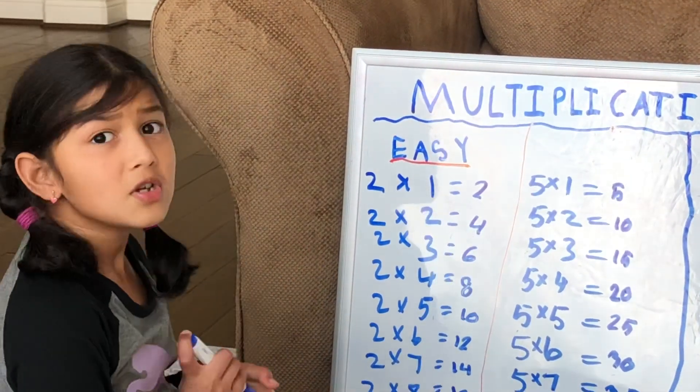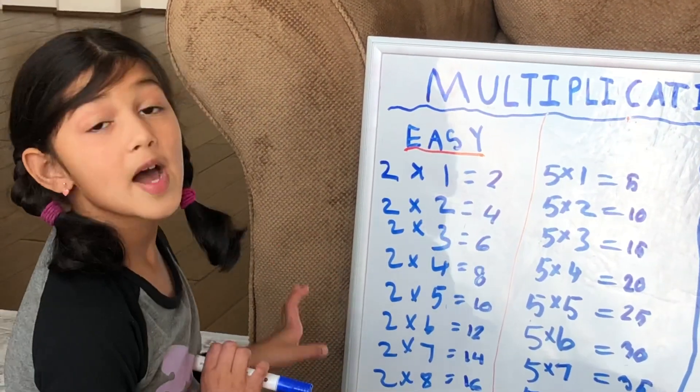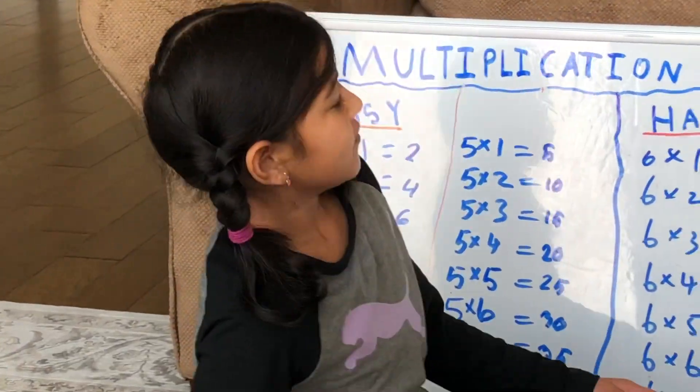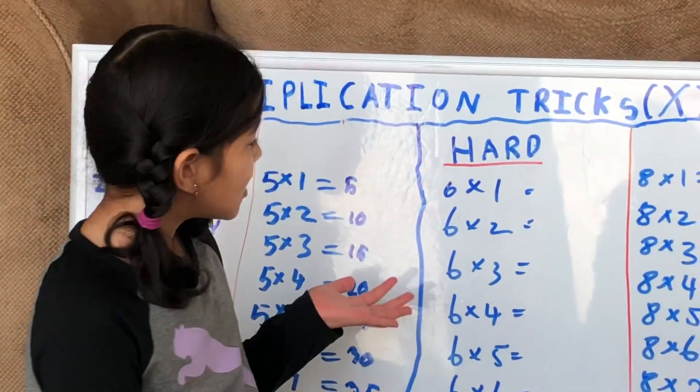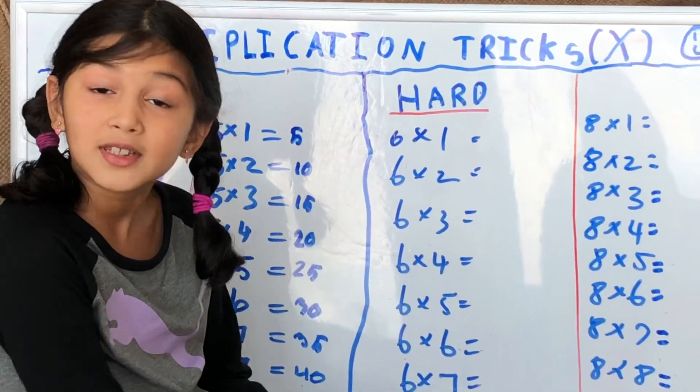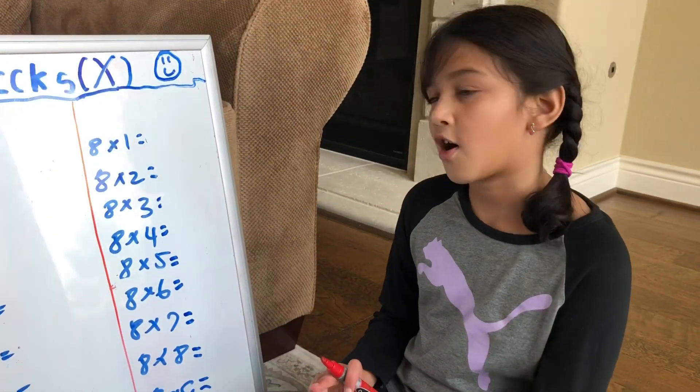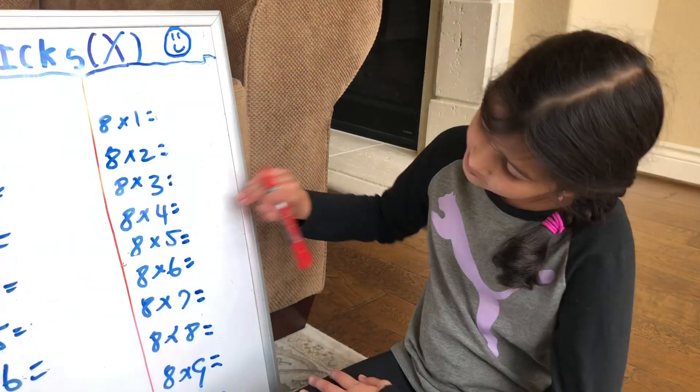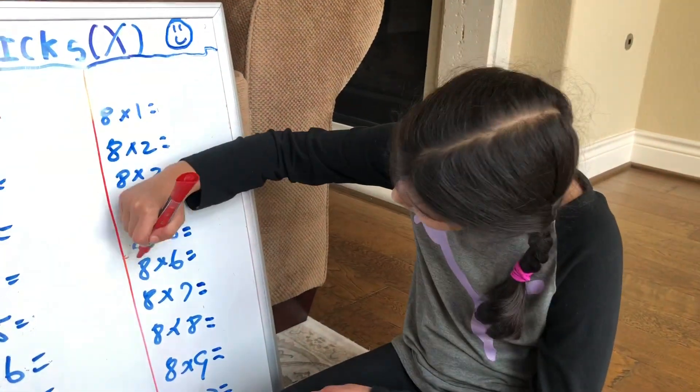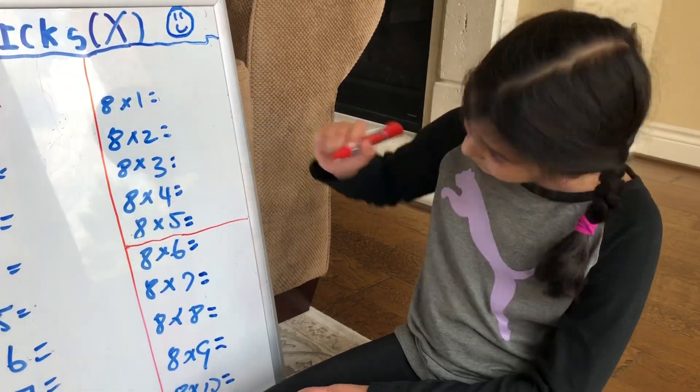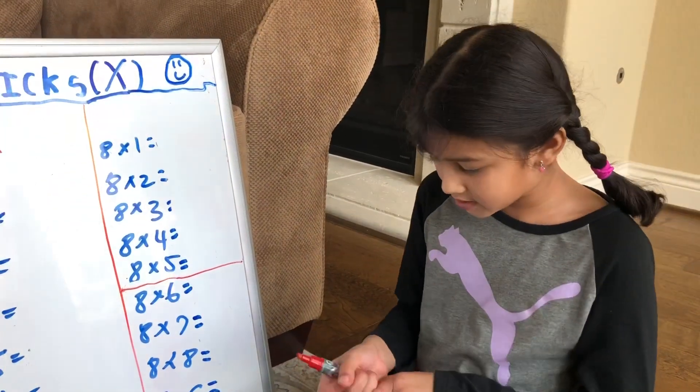There are more easy ones, but we'll leave that for later. Let's move on to hard, which may look hard, but they're not so hard after all. In the 8s, all you really have to do is split it in half, just like this. So let's start.